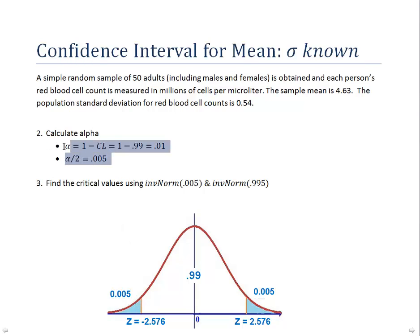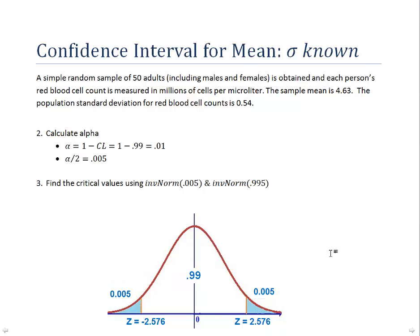The next step is to find alpha. Alpha equals 1 minus the confidence level: 1 minus 0.99 equals 0.01. What we actually use is alpha over 2. In calculating the confidence interval, we put 0.99 of the probability right in the middle of the distribution, and what remains is split equally into the left and right tails — that's why we use alpha over 2, which is 0.005 in this case. Using the inverse norm function, we get Z-values of minus 2.576 on the left tail and 2.576 on the right tail.